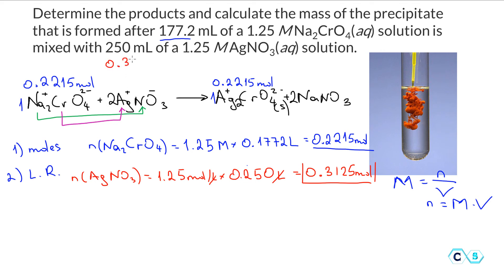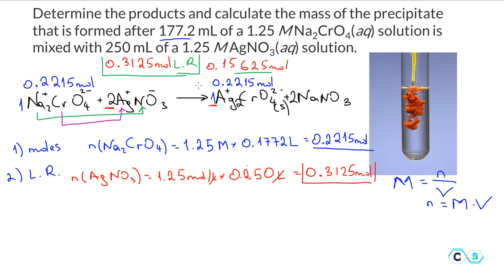Based on silver nitrate — 0.3125 moles — with a 2-to-1 molar ratio (2 moles of silver nitrate produce 1 mole of silver chromate), we divide by 2 to get 0.15625 moles of silver chromate. Comparing the two: 0.15625 is less than 0.2215, so silver nitrate gives less product — meaning silver nitrate is the limiting reactant, even though it is present in larger quantity.